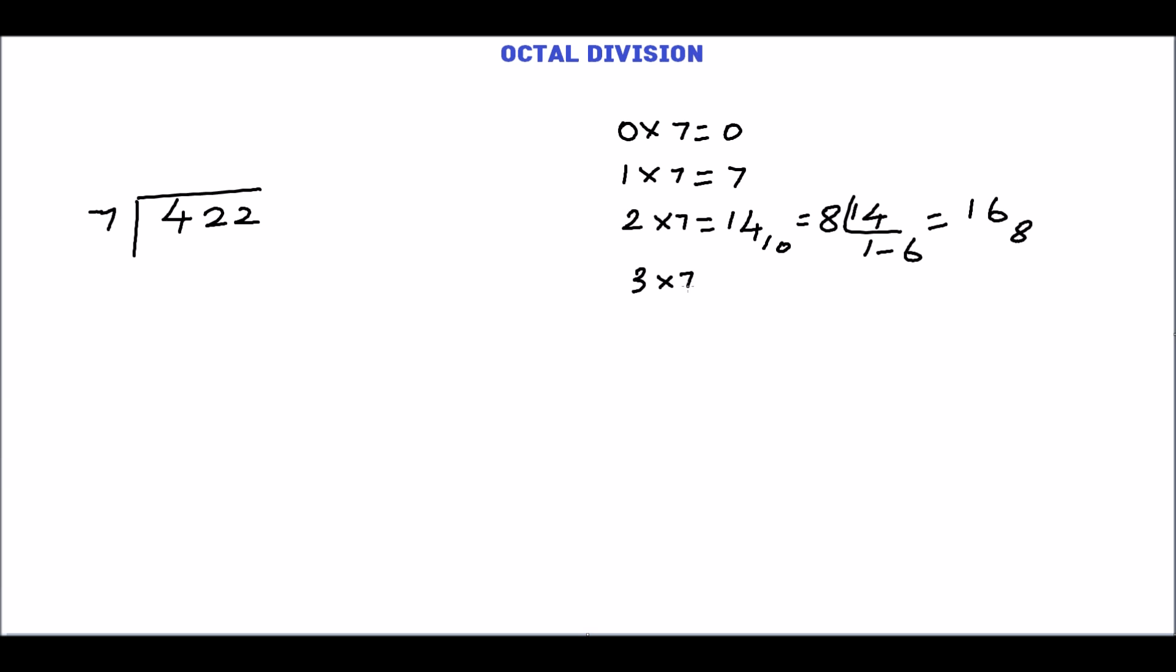3 times 7 is 21 in base 10. Convert this into octal. The quotient is 2 and the remainder is 5. So the equivalent octal number is 25 base 8.